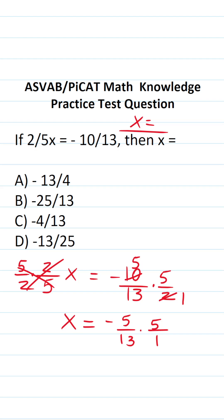A negative times a positive is going to be a negative, so we know our answer is going to be negative. When you multiply fractions, you multiply straight across. So this becomes 5 times 5, which is 25, over 13 times 1, which is 13.